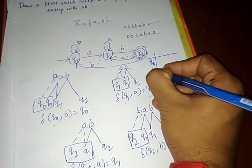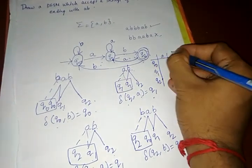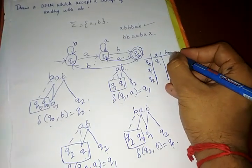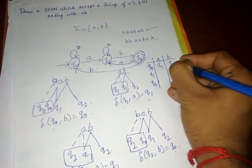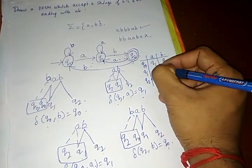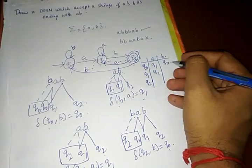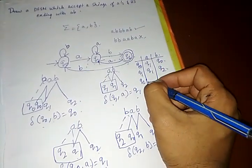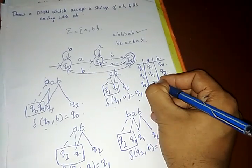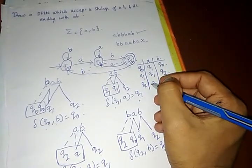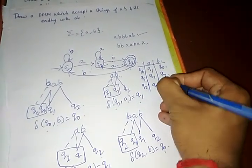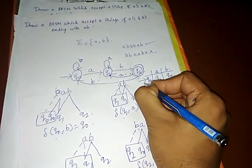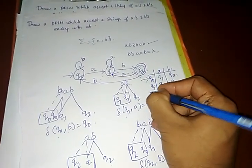The transition table has three states Q0, Q1, Q2 and two inputs A and B. On giving A to Q0 it goes to Q1; giving B to Q0 it remains at Q0. Giving A to Q1 it remains at Q1; giving B to Q1 it reaches the accepting state Q2. On giving A to Q2 it goes to Q1; giving B to Q2 it goes to Q0. Q0 is marked with an arrow as the start state, and Q2 is marked with a star as the accepting state.